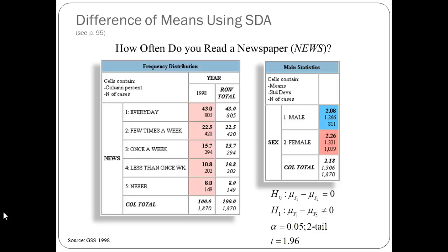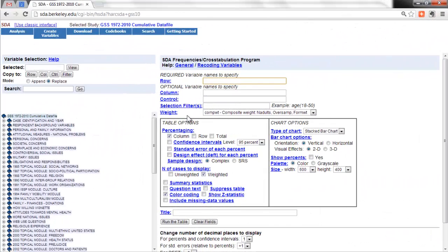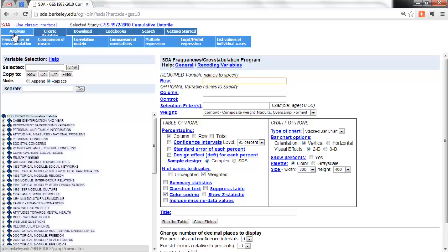Let's take a quick break here and run over to SDA and I'll show you where I got these numbers. So here we are in SDA at the default page. This is the page I would go to if I wanted to look at the univariate frequency distribution of our variables. But I want to generate the means, standard deviations, and sample sizes of the news variable by gender. So I need to go up here to analysis and do a comparison of means.